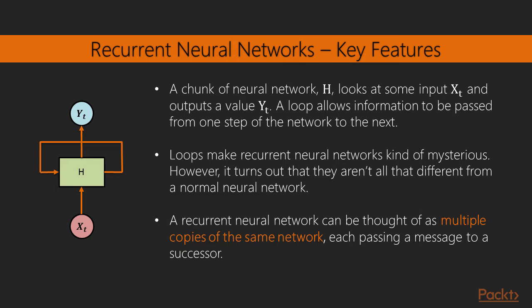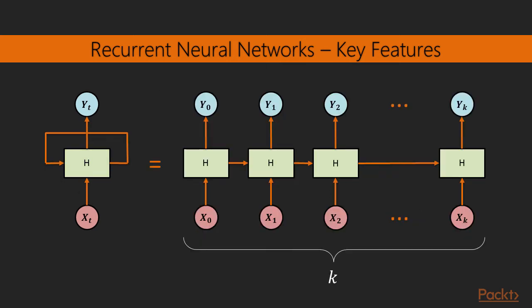These loops make recurrent neural networks seem kind of mysterious. However, if you think a bit more about it, it turns out that they aren't all that different from a normal neural network. Indeed, a recurrent neural network can be thought of as multiple copies of the same network, each passing a message to its successor. So for example, if we are dealing with a sequence along k timestamps, we can unroll the recurrent neural network such that we have multiple copies of the same network repeated k times. And if you look at it, this is just a simple feedforward neural network.